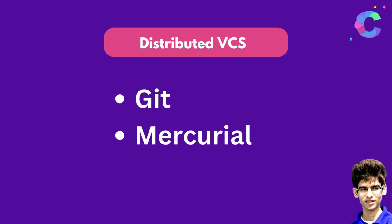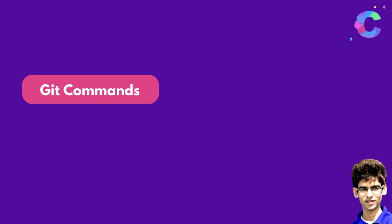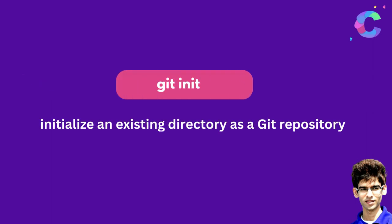Git is the most commonly used distributed version control system, and that's what we're going to explore in this course. We'll create a repository, set up a project, and commit it using Git commands. Before going into theory, let's first see the practical purpose of each command so you can understand how they work.